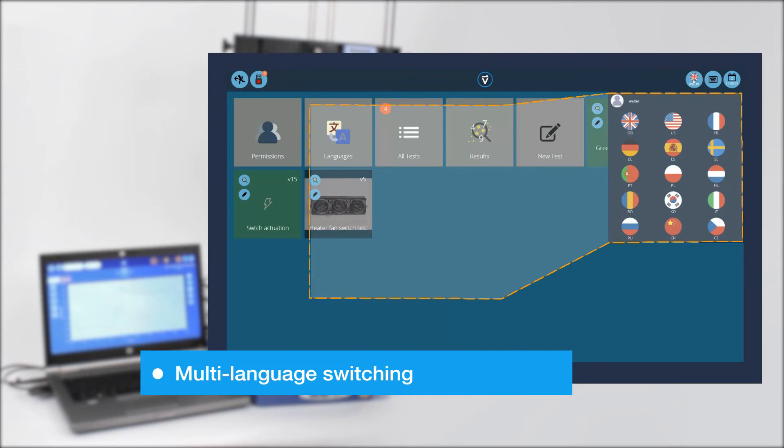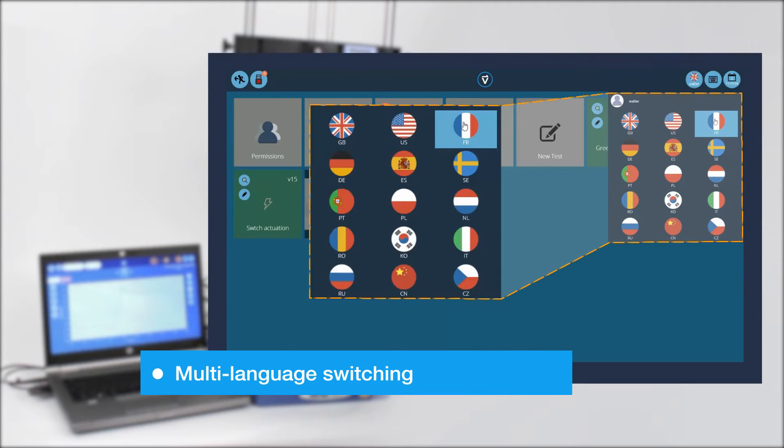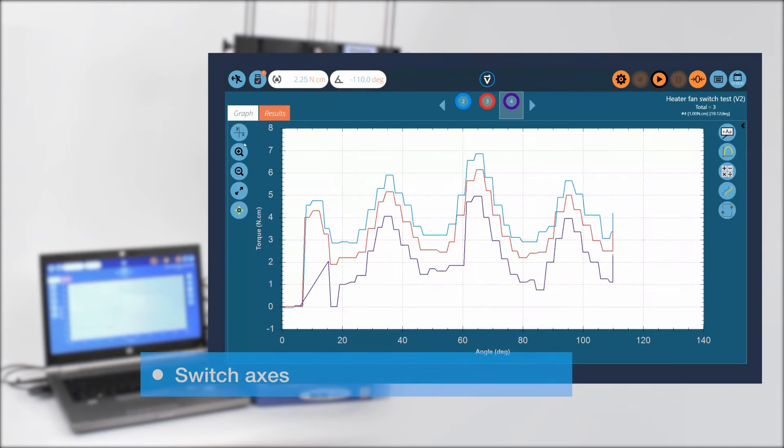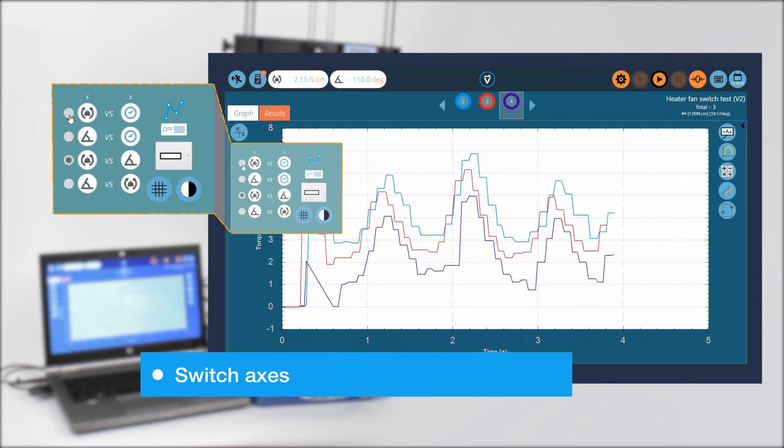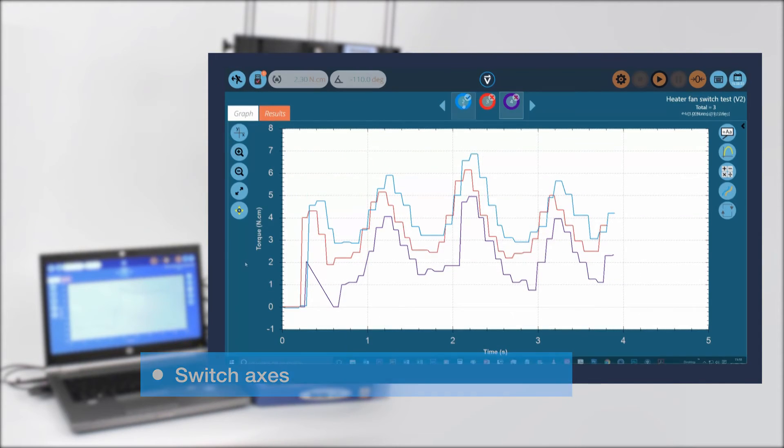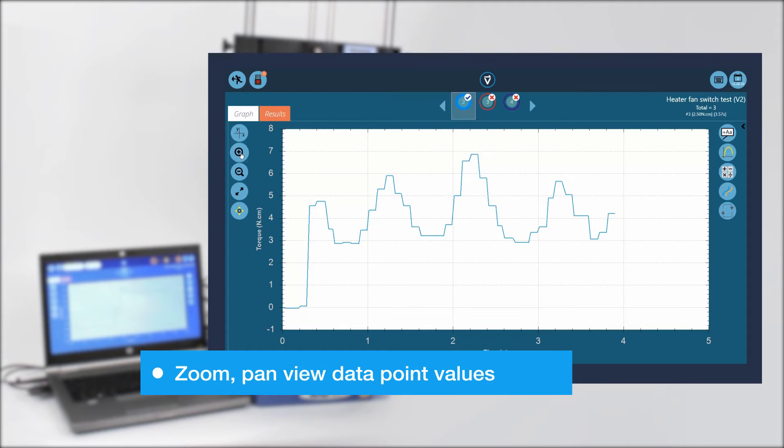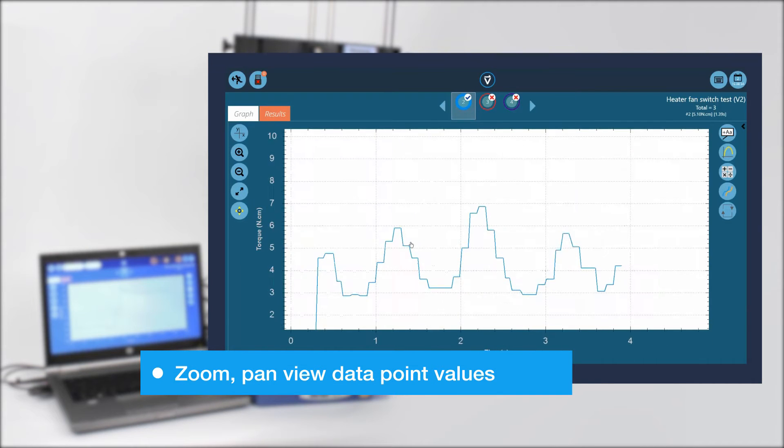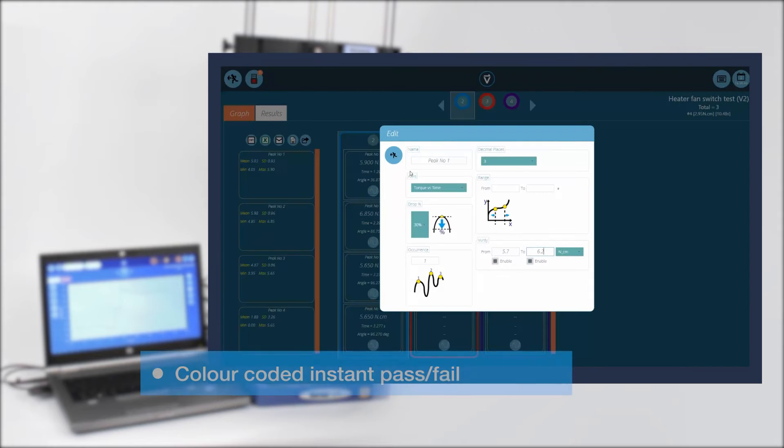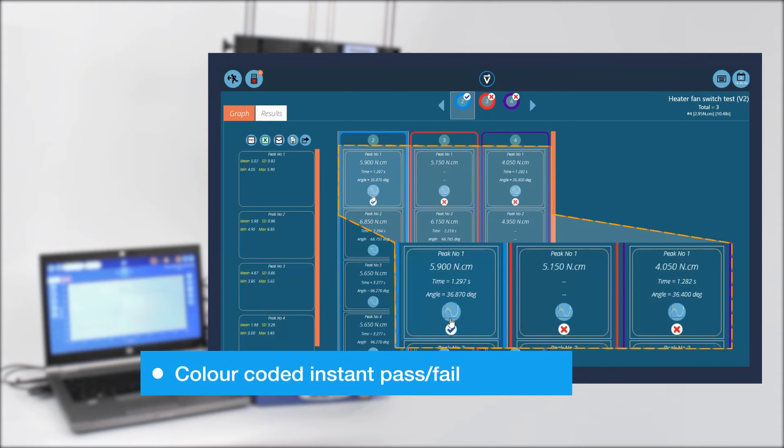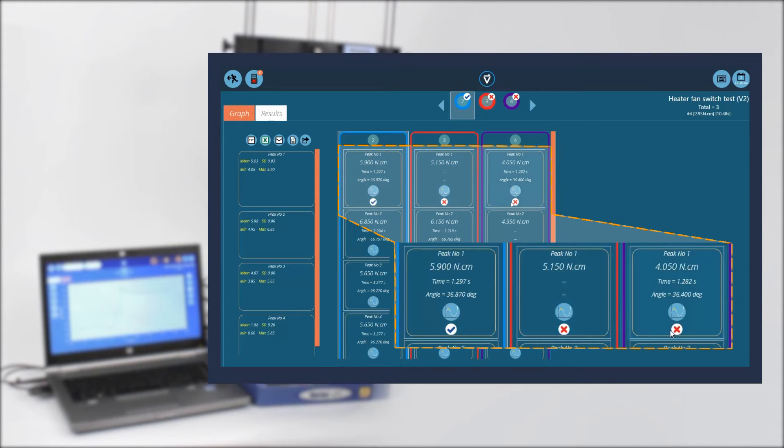Users can work in their native language. Data can be presented in the most appropriate way. Load and displacement axes can be switched, and you can pan around and zoom in on points of interest. Your sample performance can be seen instantly with colour-coded pass and fail limits that you set.